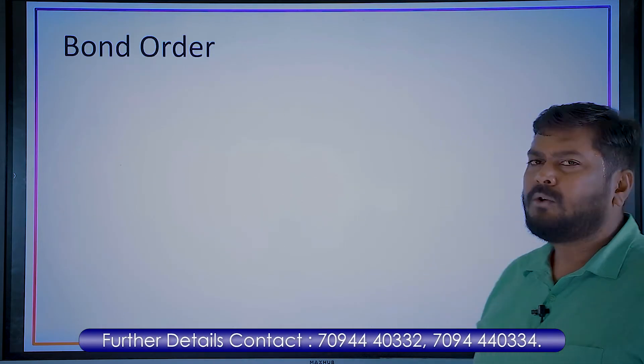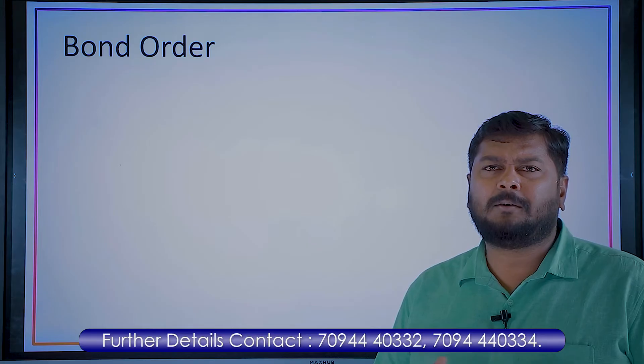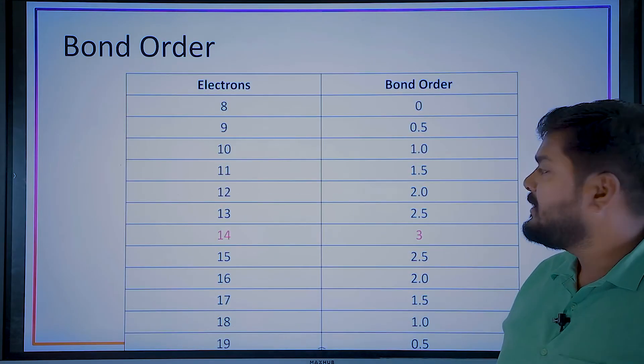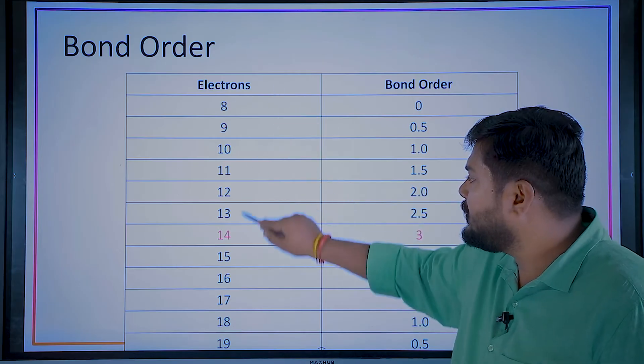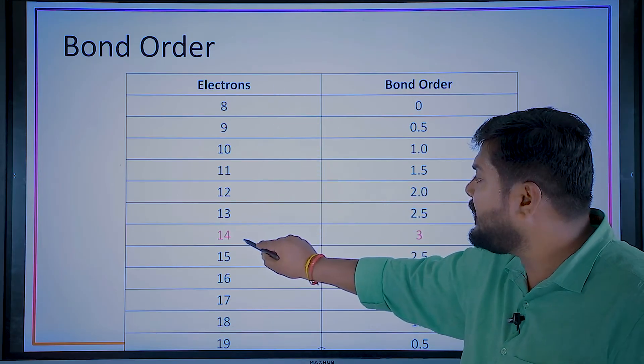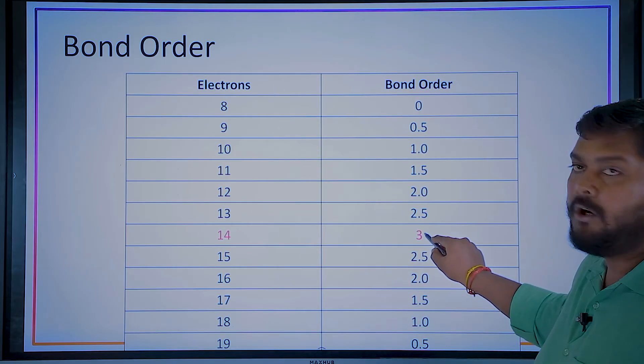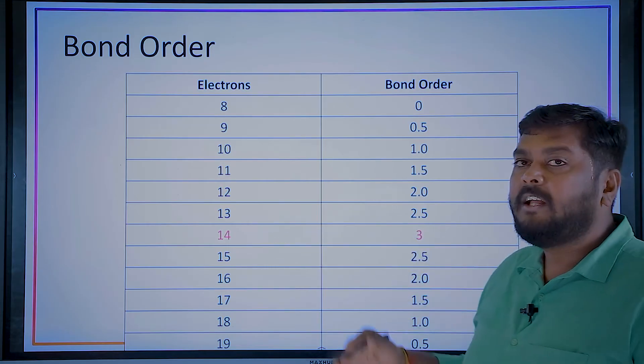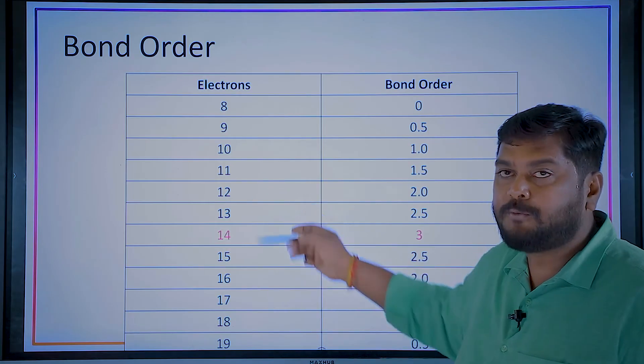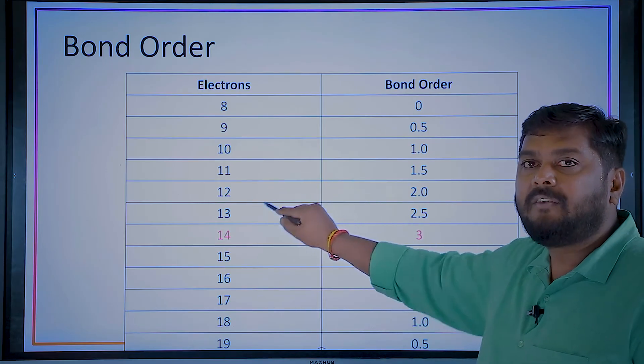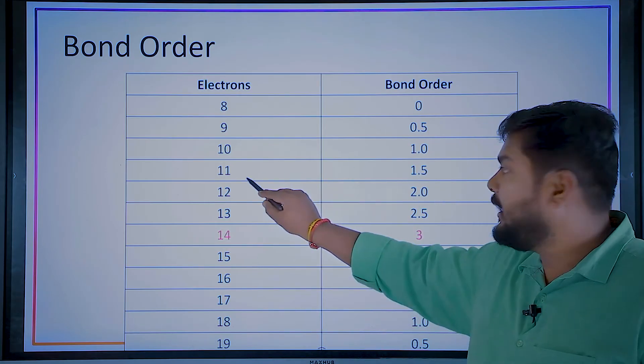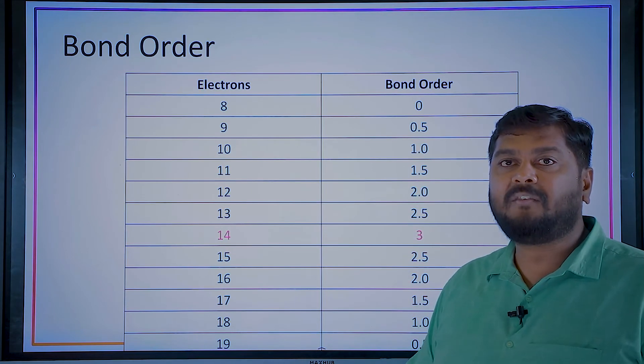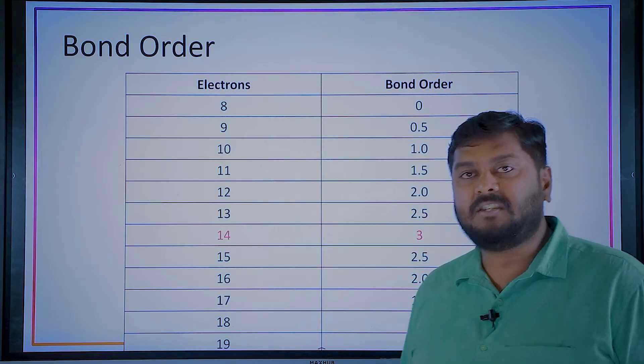So if I have to predict bond order for each molecule, I have a shortcut for you. See here, molecules with 14 electrons will have 3 bond order. And then if you have 13 electrons, reduce one electron, it's 2.5. 12 electrons, 2. 11 electrons, 1.5. 10 electrons, 1. 9 electrons, 0.5. And 8 electrons, that will be 0.